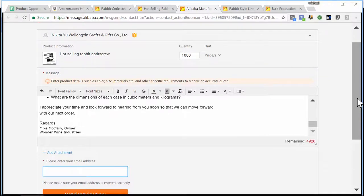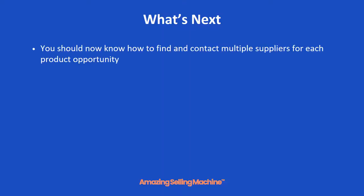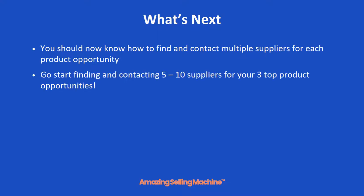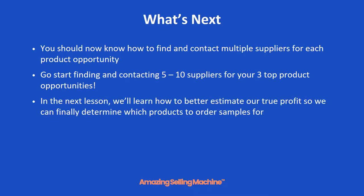Remember, you want to do this for five to ten different suppliers for each of your product opportunities. That's it — now you know how to find and contact multiple suppliers for each of your top product opportunities, whether those suppliers are in the United States using Google or overseas using Alibaba.com. The next step is to go find and contact at least five to ten suppliers for each of your top three product opportunities. As suppliers get back to you, capture those that seem like a good match on your product opportunity spreadsheet. In the next lesson, we're going to learn how to better estimate our true profit to finally determine which products to order samples for.